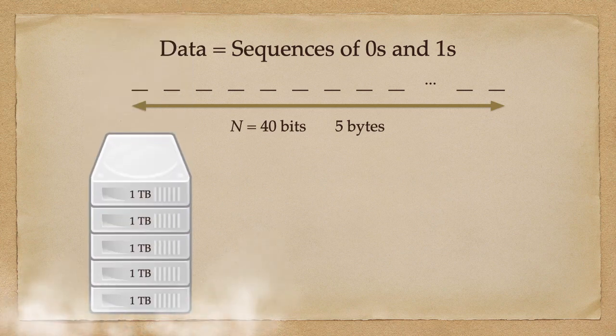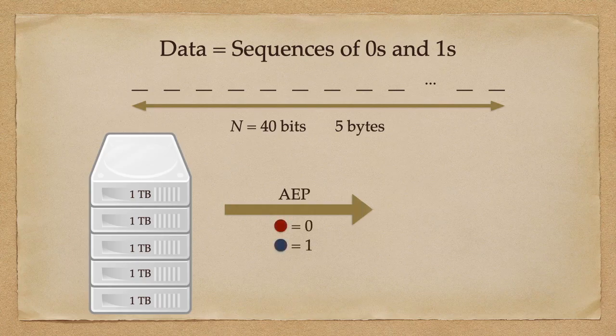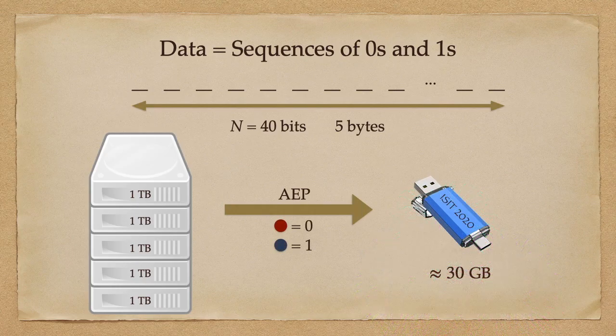Recall that if we want to store all possible sequences, we will need five hard drives. Instead, if we decide to store only typical sequences, we only need a USB flash memory.